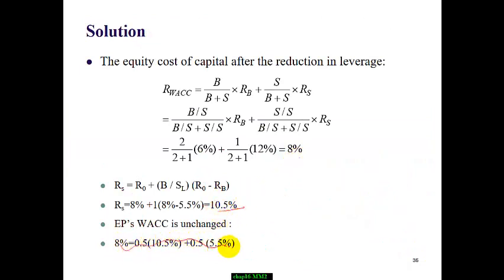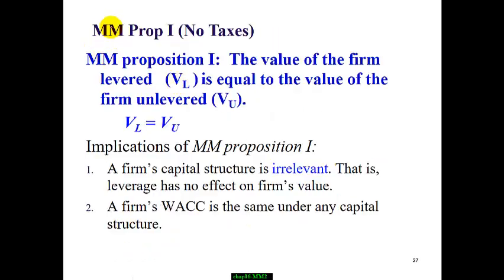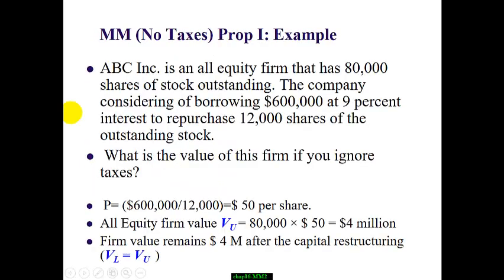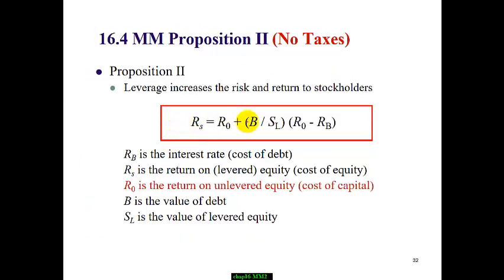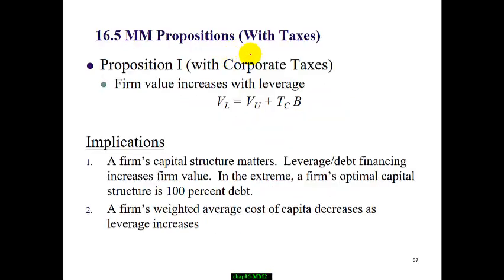We have finished discussing MM Propositions without corporate tax. Proposition 1 says leverage has no impact on firm value — it does not matter, value remains constant. Proposition 2 says leverage has a positive and linearly increasing effect on cost of equity. Now we move on to MM theory dropping the no-corporate-tax assumption. In the real world, companies pay tax.